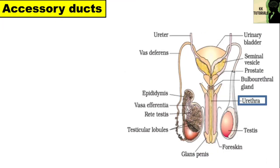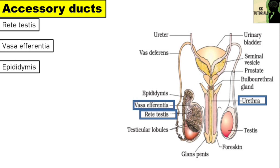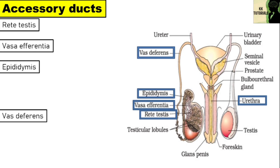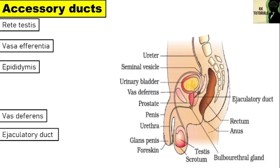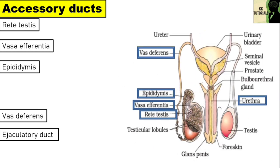The accessory ducts include rete testis, vasa efferentia, epididymis, vas deferens, ejaculatory duct and urethra.